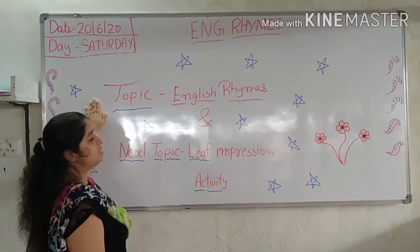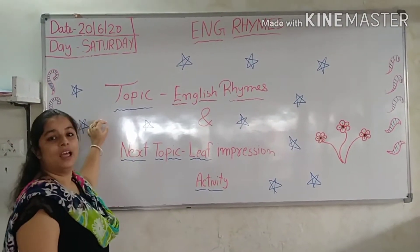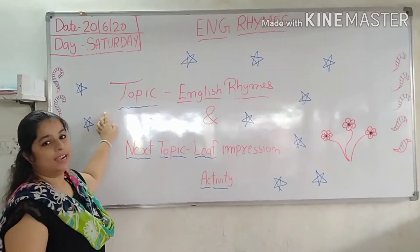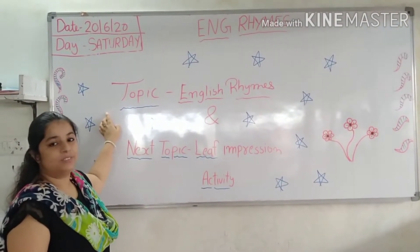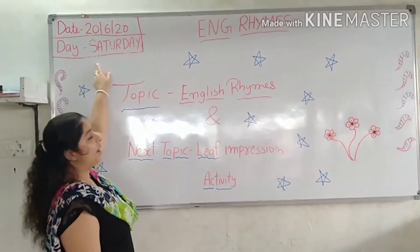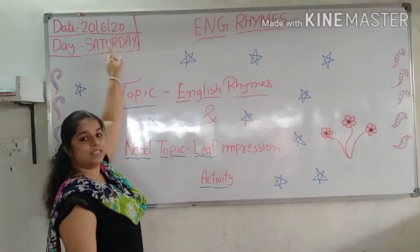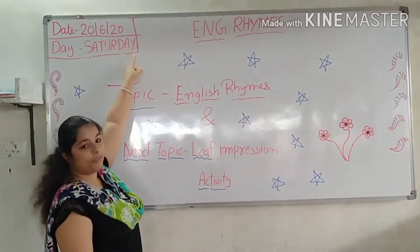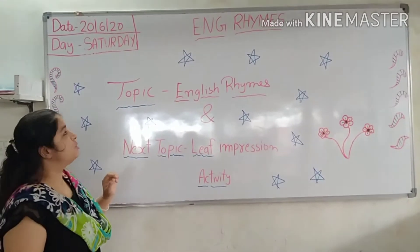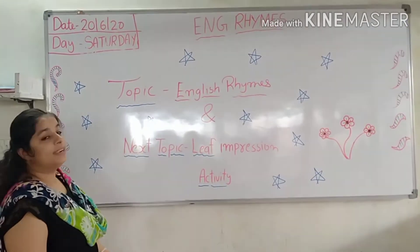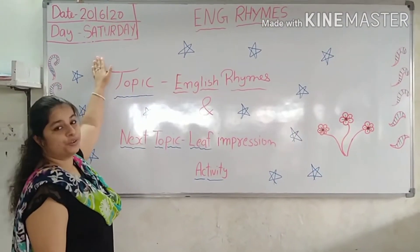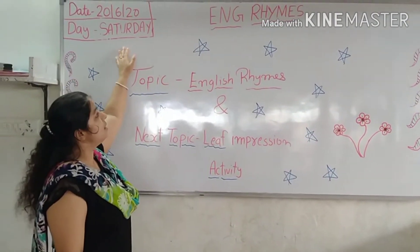First of all, which date is today? Tell me kids, which date is today? 26, 2020. Which day is today? Tell me kids, which day is today? Saturday.